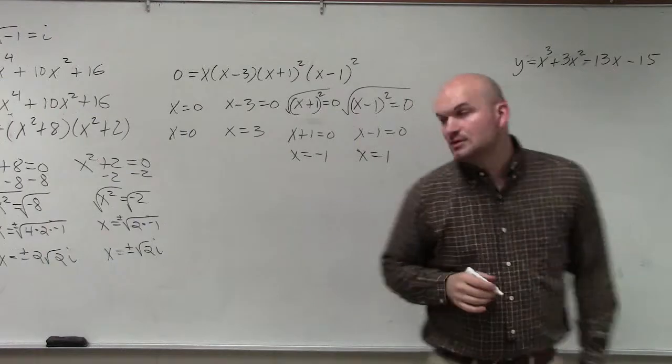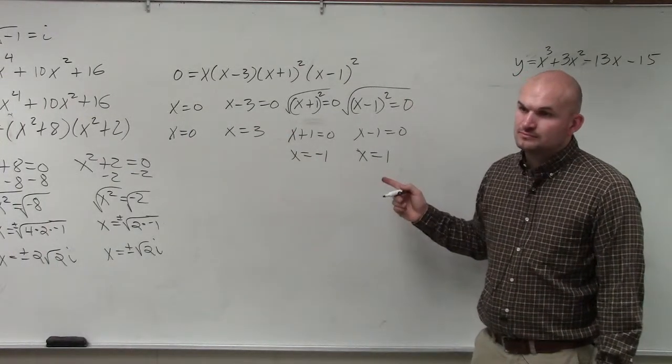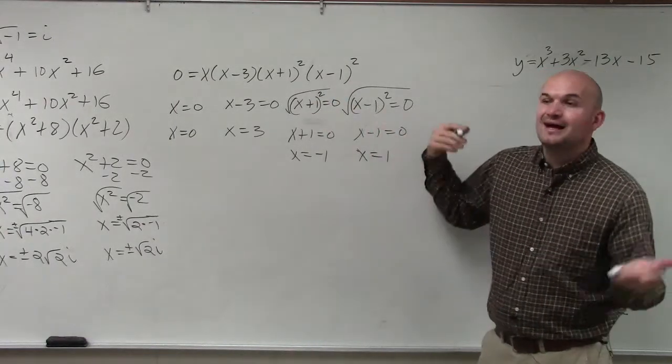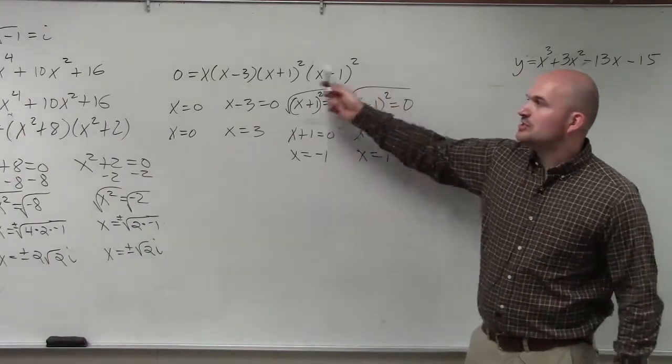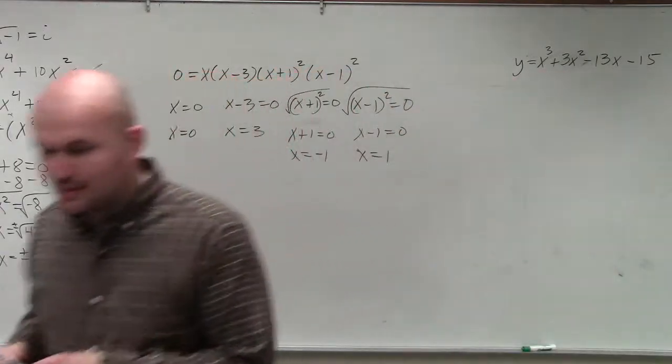So my zeros are x equals 0, 3, negative 1, and positive 1. Take the square root, that just gives it, but you're still left with that expression. And I should note, we'll talk about this later, but these two zeros have a multiplicity of 2, which we'll go over later.